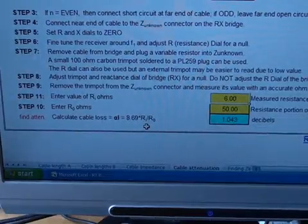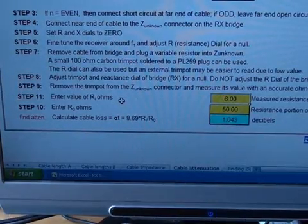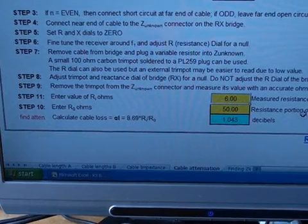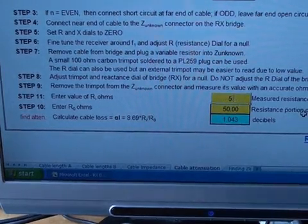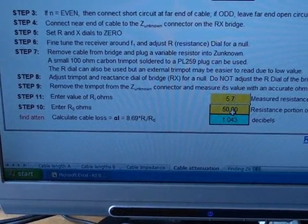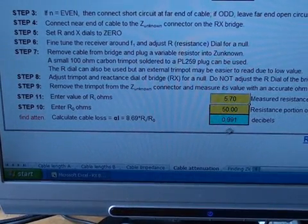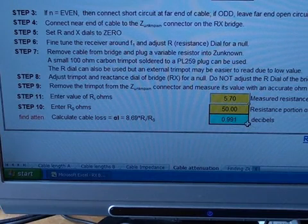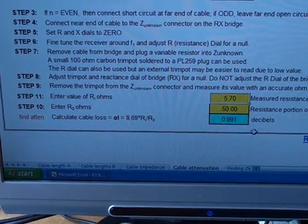So down here in the yellow box, it says enter the value of RI. We enter 5.7. 5.7. And we know the cable is 50 ohms. And the calculation comes up with a loss of 0.991 dB. That's close enough to 1 dB.